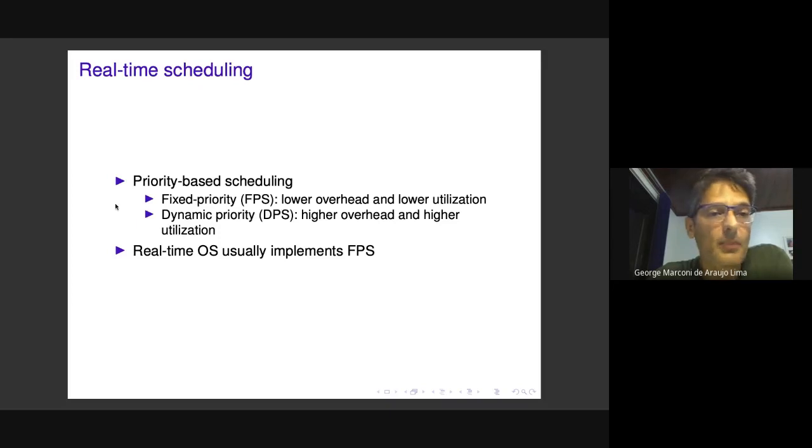Classical approaches are based on assigning priority to tasks, so the operating system can select the highest priority task at runtime. There are two ways of doing priority-based scheduling. One is assigning priority at design time, called fixed priority scheduling. The other assigns priority during runtime, called dynamic priority scheduling. Fixed priority scheduling has lower overhead but allows lower system utilization due to schedulability issues.